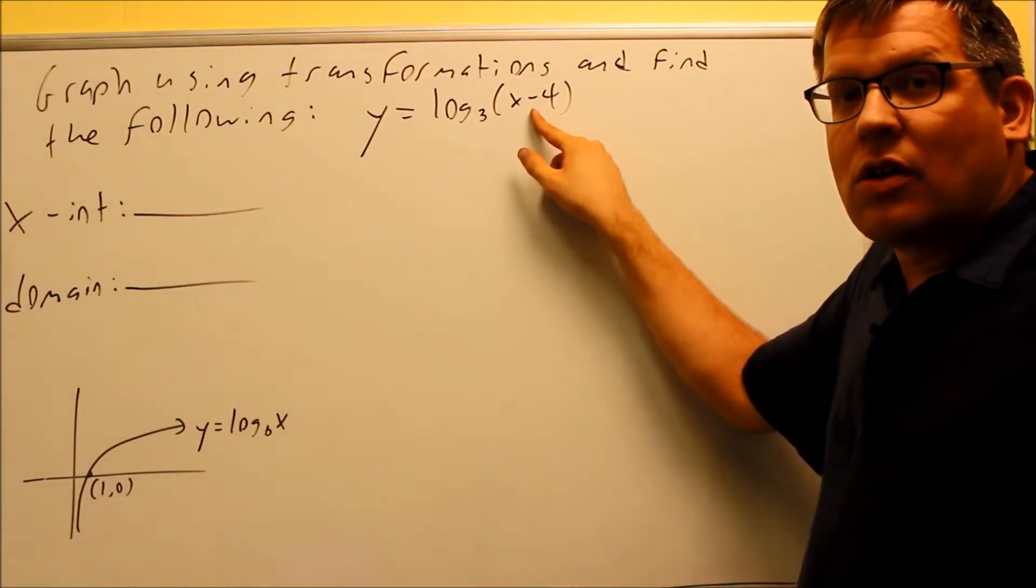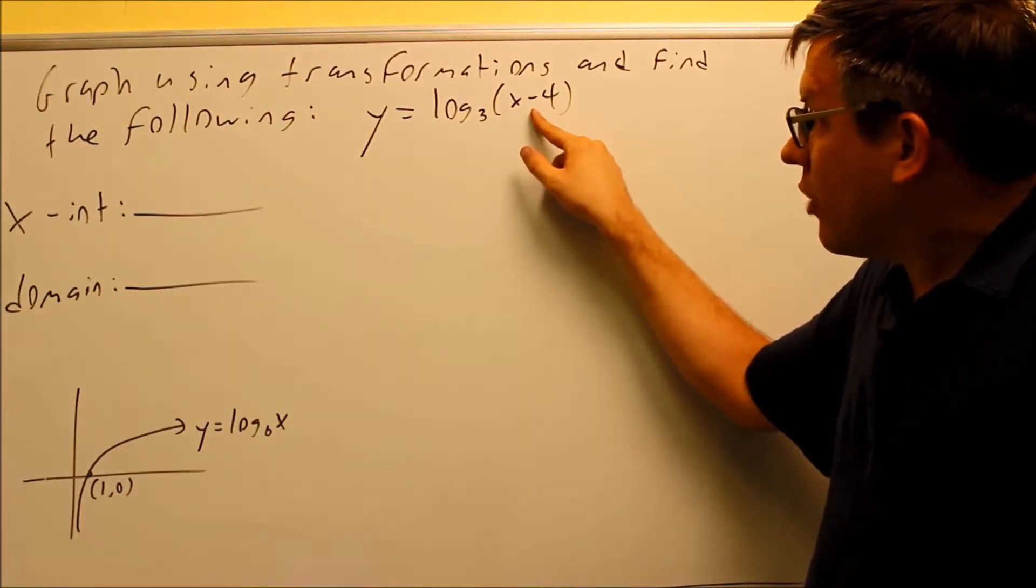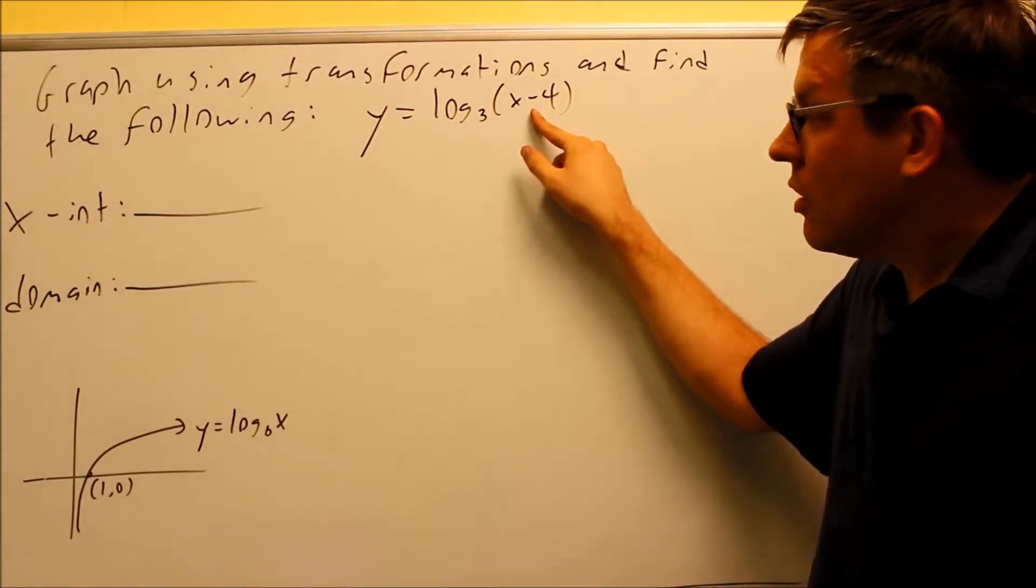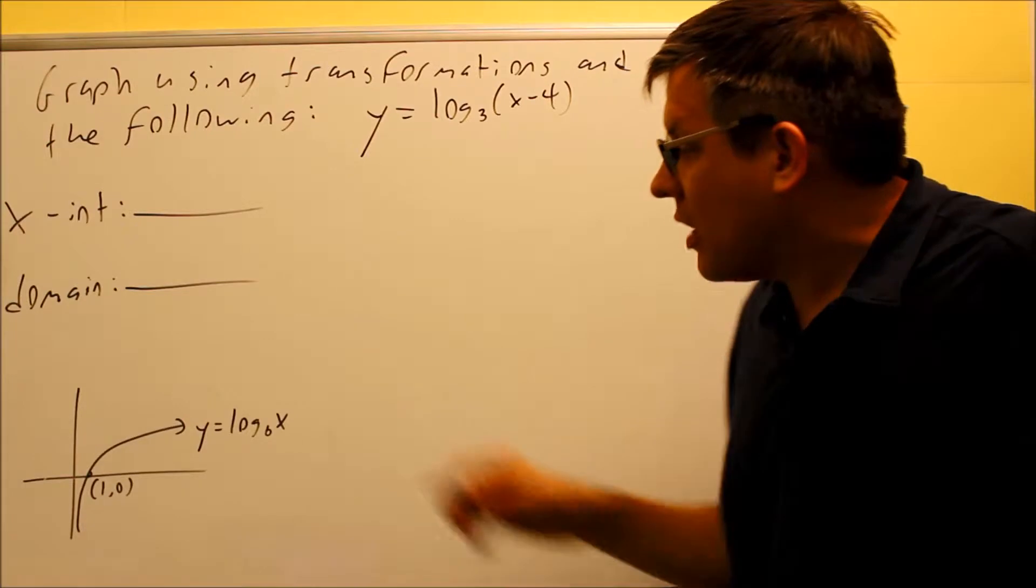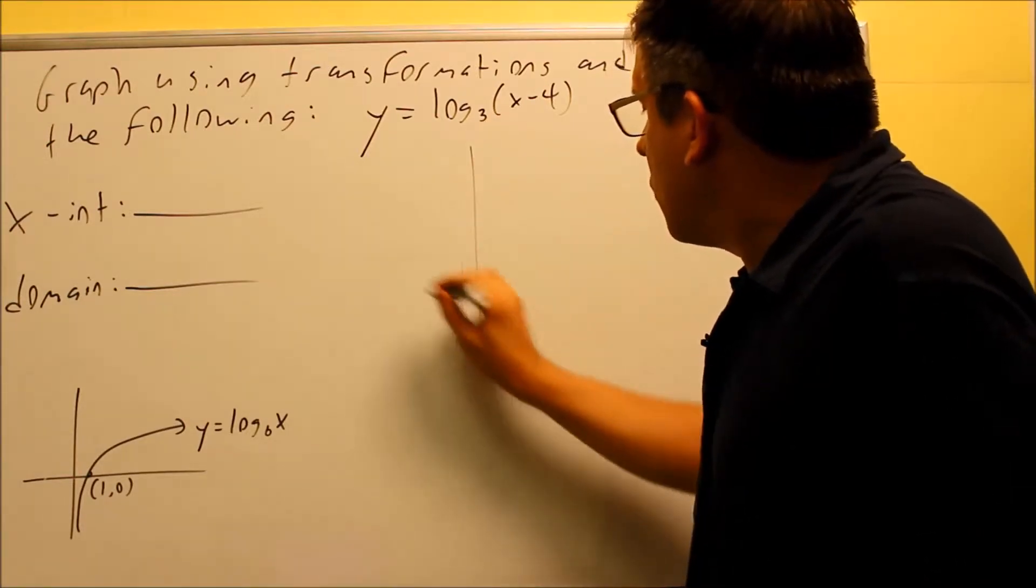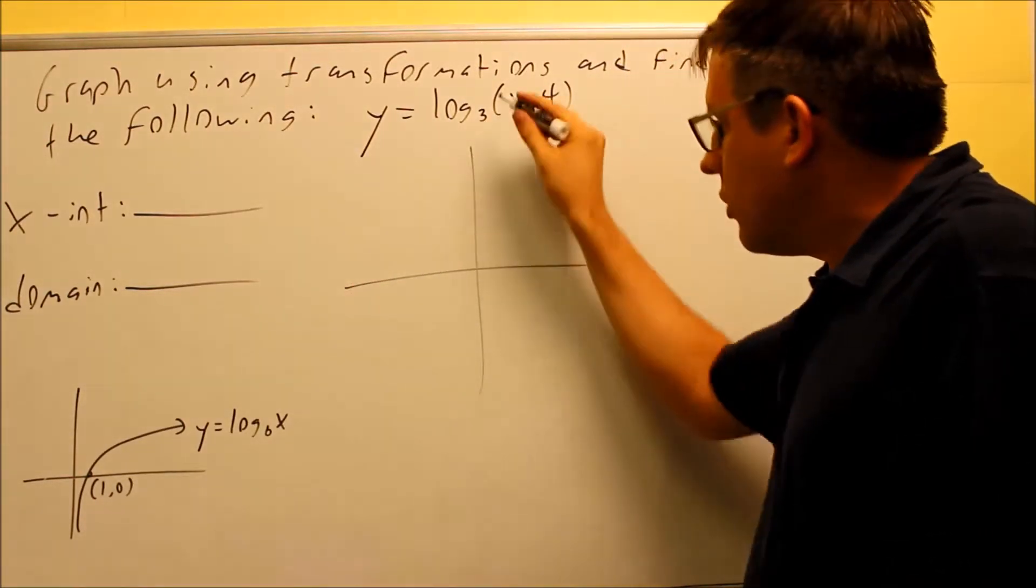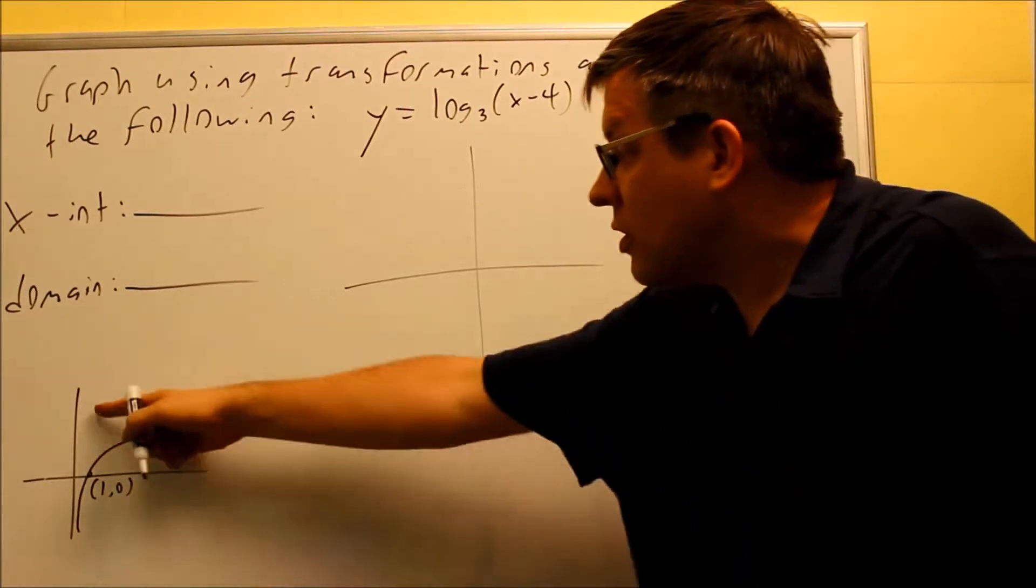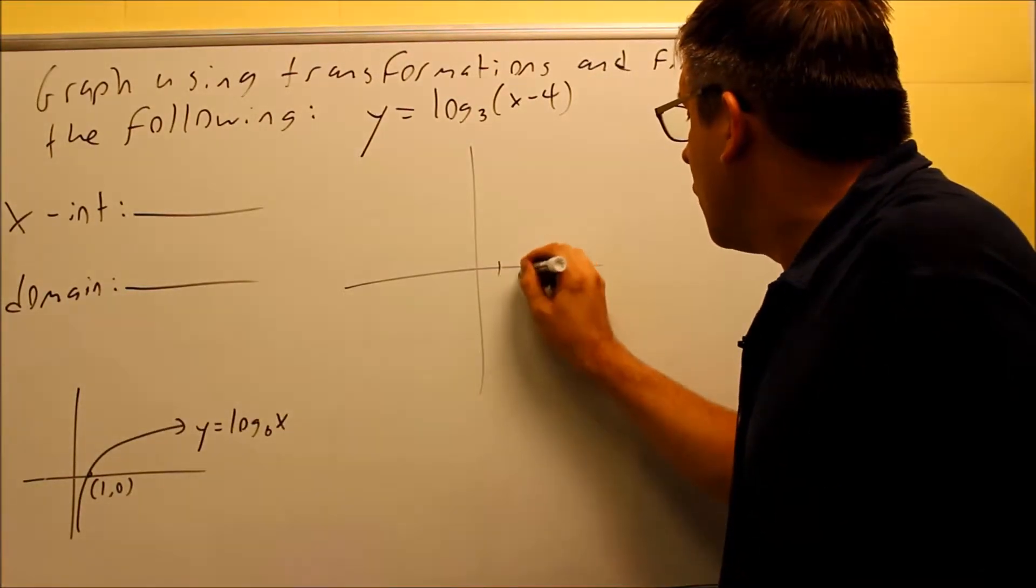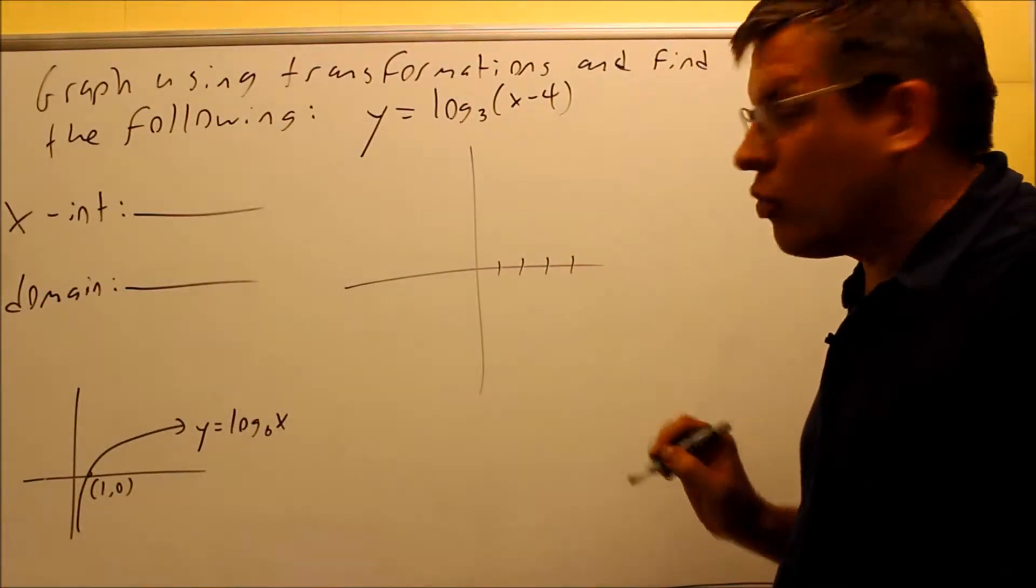So instead of a minus, instead of moving it to the left towards the negatives, we're actually moving it to the right. So that involves starting with the base graph, and what we're going to do is normally the asymptote is going to be at zero. We're going to move that four places over to the right.